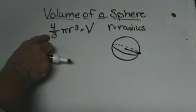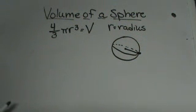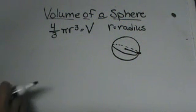The formula is 4 thirds pi r cubed. That is how you find the volume of the sphere.